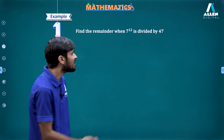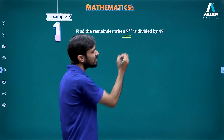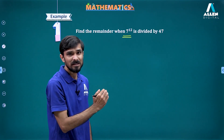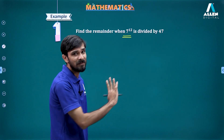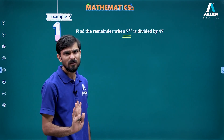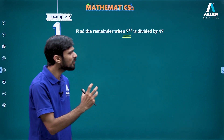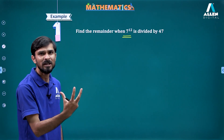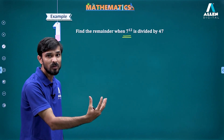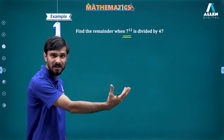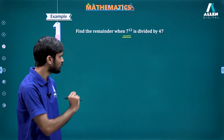The idea is that you need to find the closest power of 7 which is a multiple of 47. In this case it is going to be 49. We are going to use that 49, written as 47 plus 2, and expand it using the binomial theorem to see what remainder comes out.